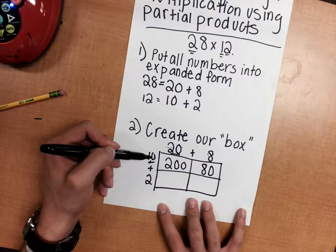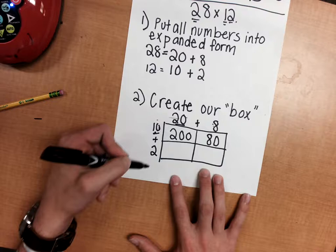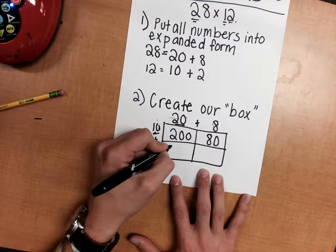This row is reserved for this 10 right here. When we go to our next row, we're going to focus on this 2. So 2 is going to be multiplied by our 20 on top—2 times 20 is 40, and then 2 times 8 is 16.